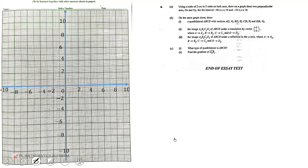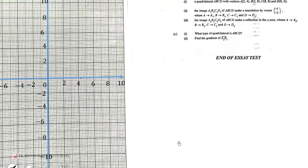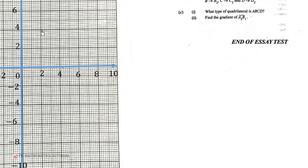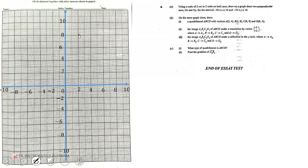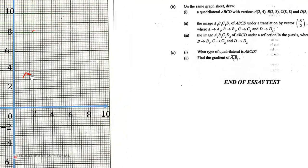Now we draw a quadrilateral ABCD with vertices: A at (2,4), B at (2,8). So B will be here where 2 on the X-axis meets 8 on the Y-axis. Then we have C at (8,8), so that will be here. You can do something like this, no problem.